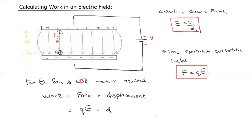Does that make sense? Whereas before, when you were going against the gravitational field, this was M and this was G and this was H. But the concept is the same. Instead of M, you've got Q. Instead of G, you've got E. And you're multiplying by the distance.